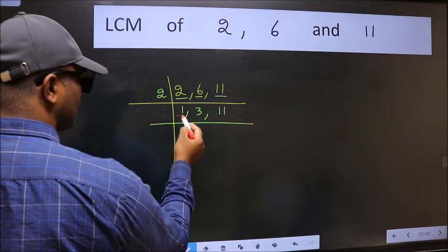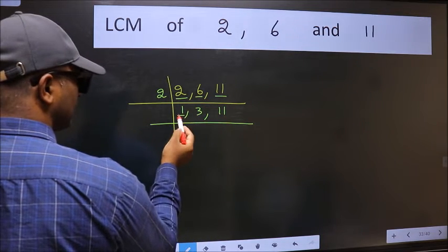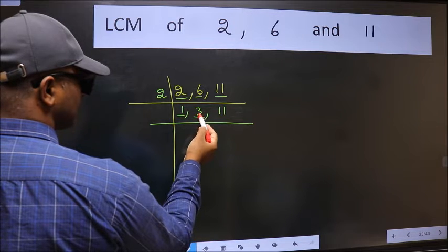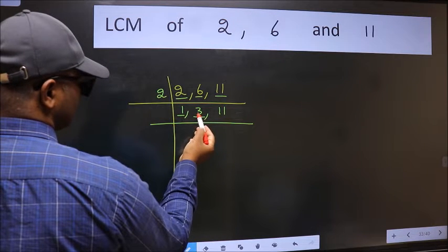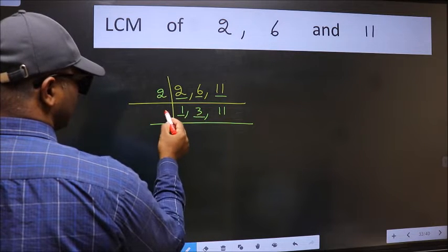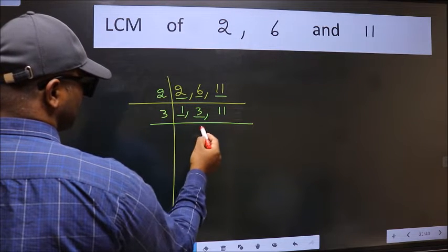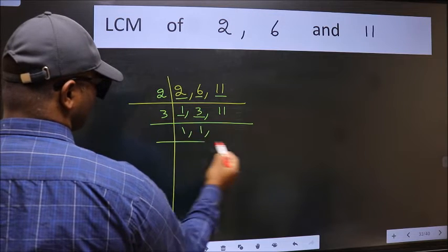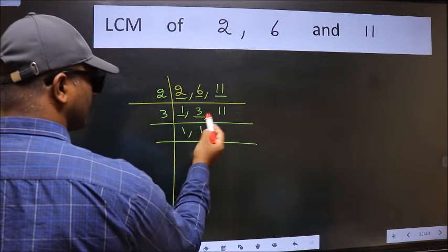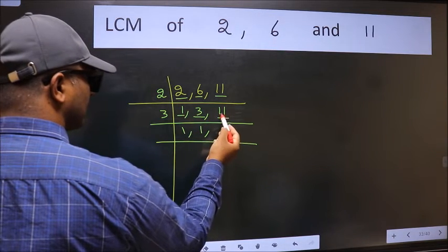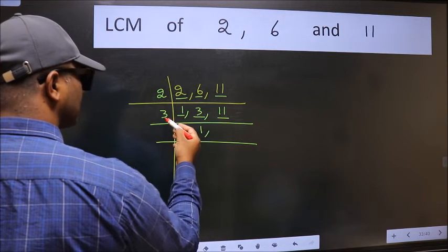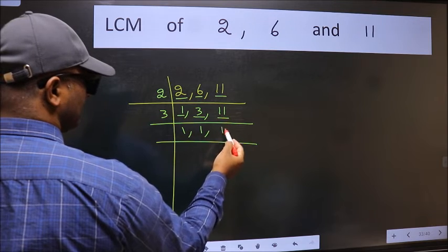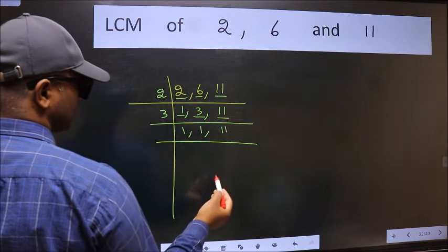Now we got 1 here, so focus on to the next number 3. 3 is a prime number, so 3 wants 3. The other number 11 is not divisible by 3, so we write it down as it is.